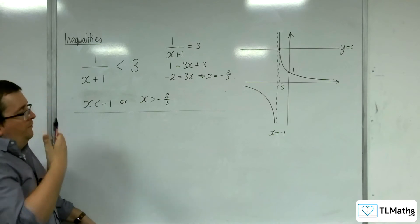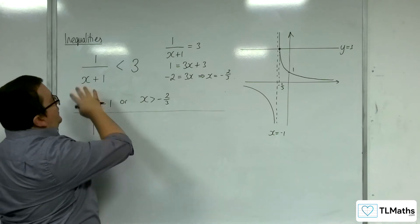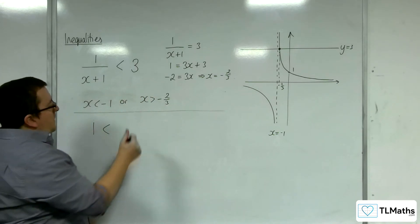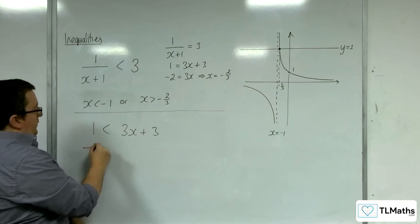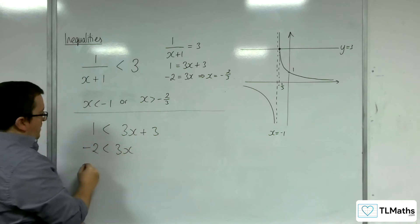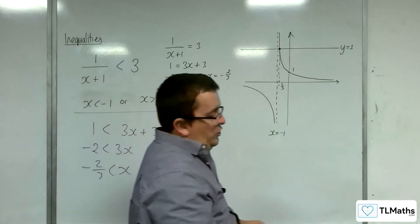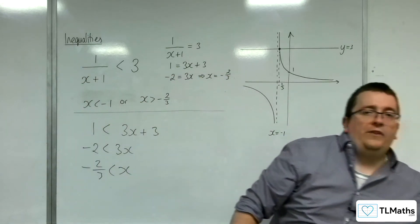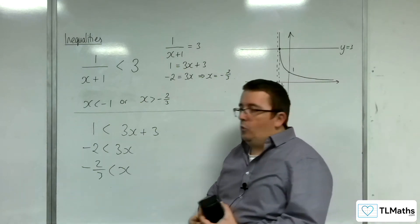The first reason is that if you did that, so let's say we multiply both sides by x plus 1, we will get 3x plus 3. Take the 3 from both sides, divide through by 3. So, x is greater than minus 2 thirds. And yeah, that's given us one of the regions, but it hasn't given us the second region. And so, this, algebraically, does not work for us.